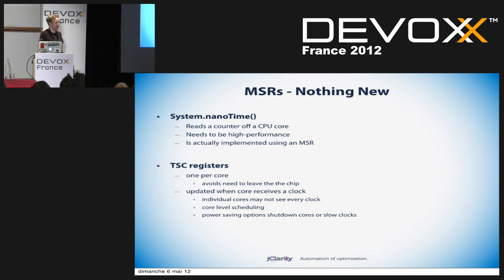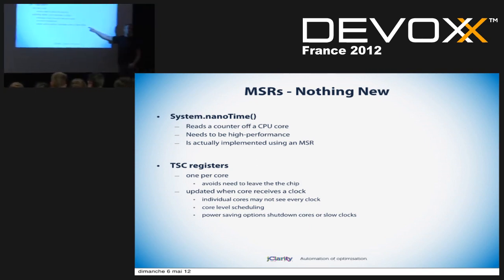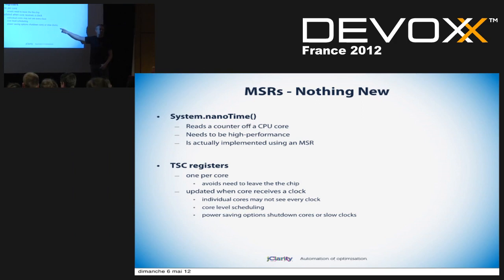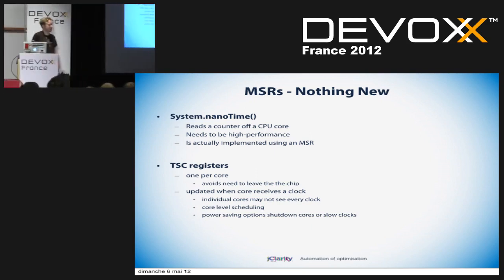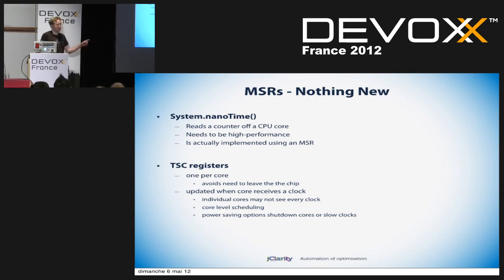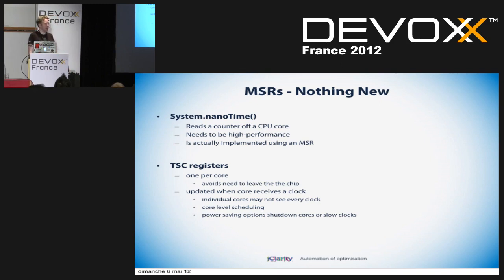One important warning for anyone doing performance tuning or writing microbenchmarks: sometimes your operating system will put your clock counter to sleep and it will stop counting — all of a sudden you think your code is running a lot faster than it really is. Also, Java processes migrate between cores all the time, so if you do a first read of a counter on one core and a second read on another, you can get really squirrely results. Up until about 12 months ago on Linux, you could actually get these things to go backwards if you were unlucky.